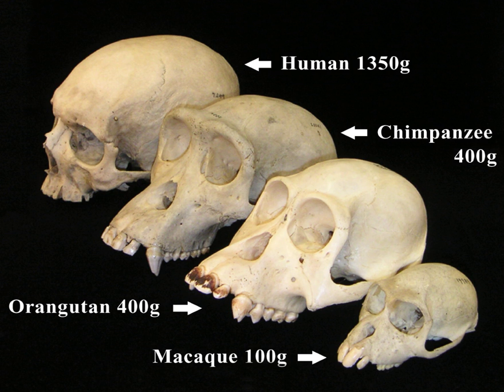As a subfield of anthropology, biological anthropology itself is further divided into several branches. All branches are united in their common application of evolutionary theory to understanding human morphology and behavior.